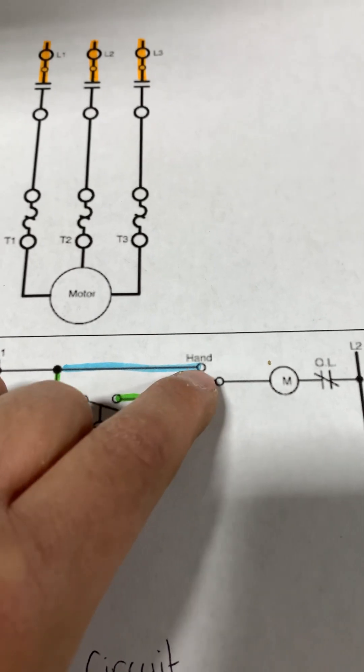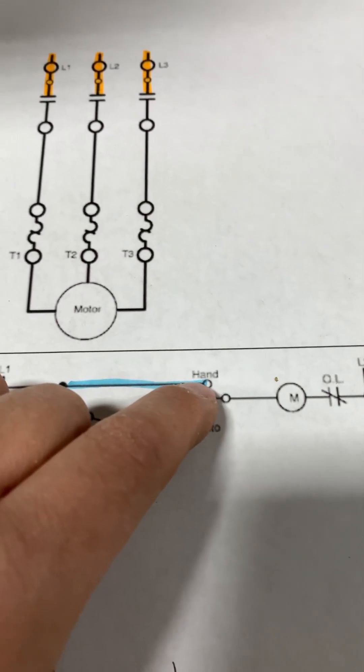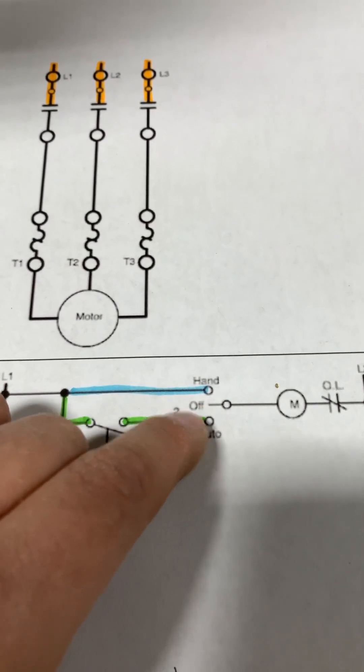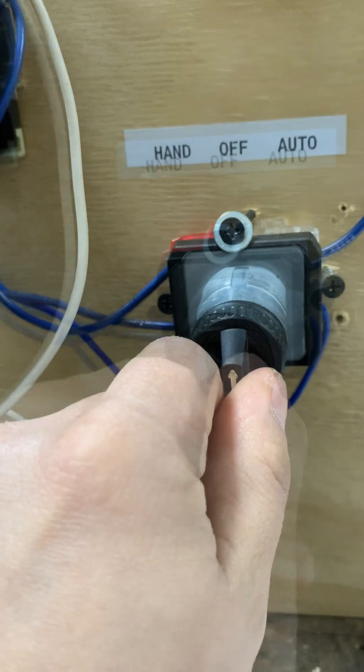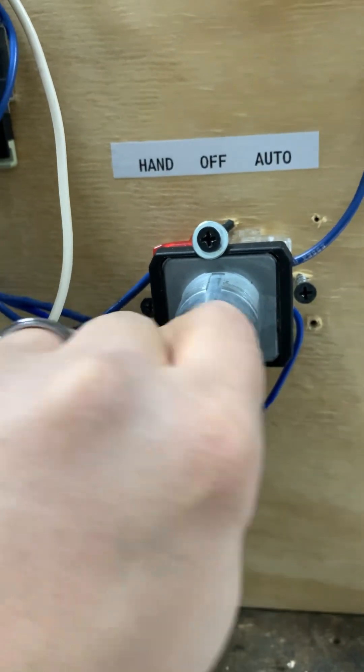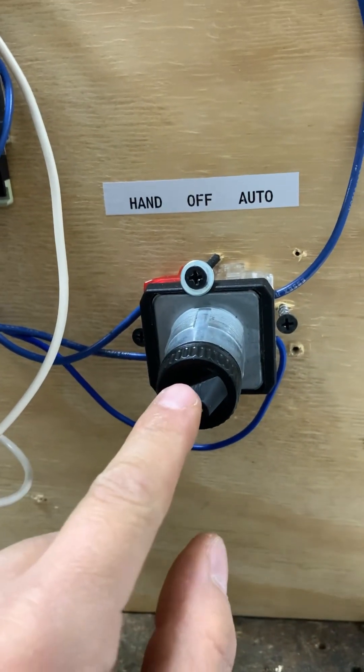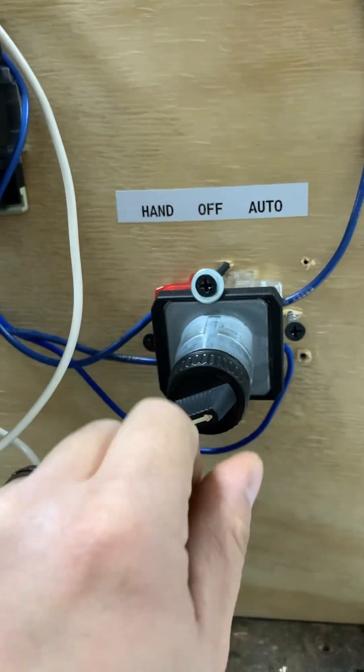Then here we have a three position selector switch: hand, off, and auto. Here I have the selector switch. If I turn it this way is hand, center will be off, and over here will be auto. You can see it: auto, off, hand.